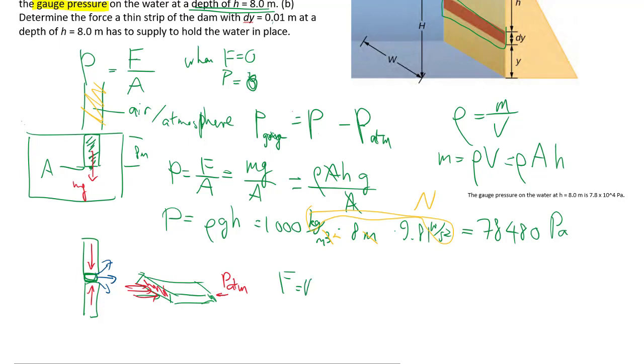To find the force, we go P times A. In this case, we have my pressure from the water. It's got a width of 10 meters and a height of 0.01 meters, that's the area. We just use kilonewtons in this case.